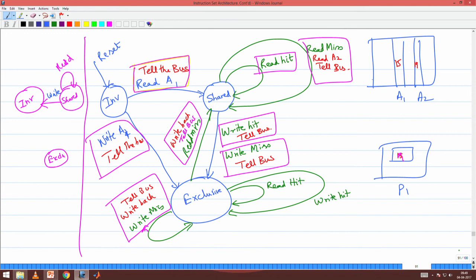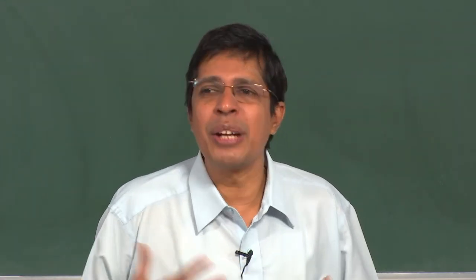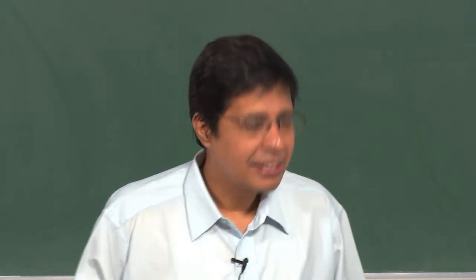I am in exclusive state and somebody reads that address. Then I say stop — write back. I have the latest value of A; let me say I have 15 but what is in memory is 10. Somebody is trying to read address A, so I say stop — I have the latest value. I go and write 15 into memory — that is what I mean by write back. I will stop him, write back, and then go to shared state because he is going to read it. He will also have 15 and I will also have 15.